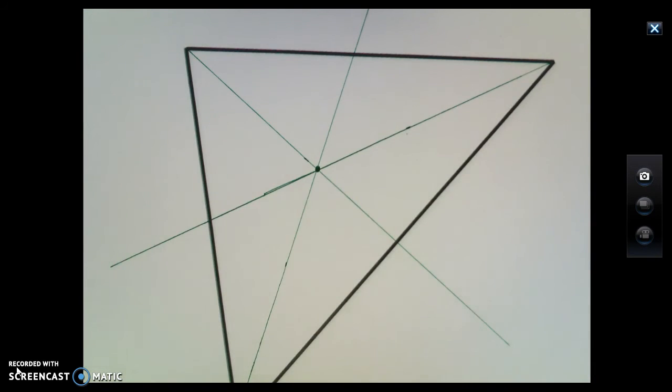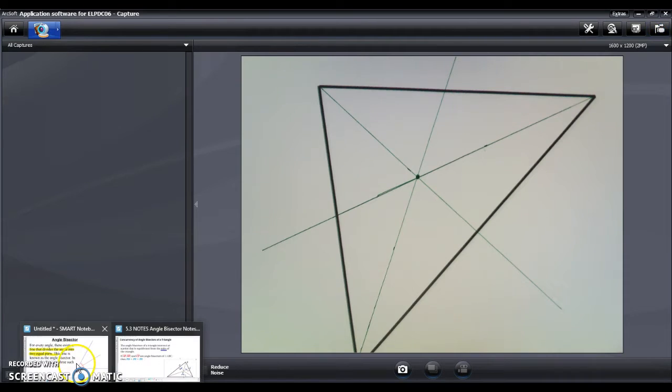We're going to give this central point a name, and this is going to be called the incenter. So this point of concurrency, this special point where three or more lines meet, is going to be called the incenter.